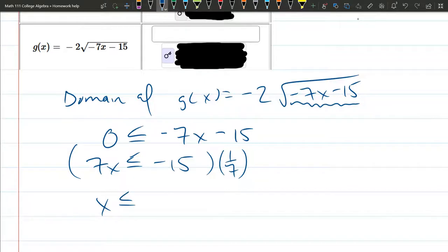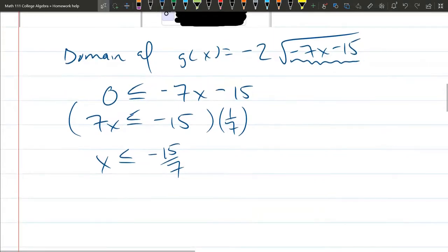So negative 15 divided by 7 is negative 15/7. You could turn this into a decimal but there's no reason to do that. These are the good x's because we made sure our square root was positive.